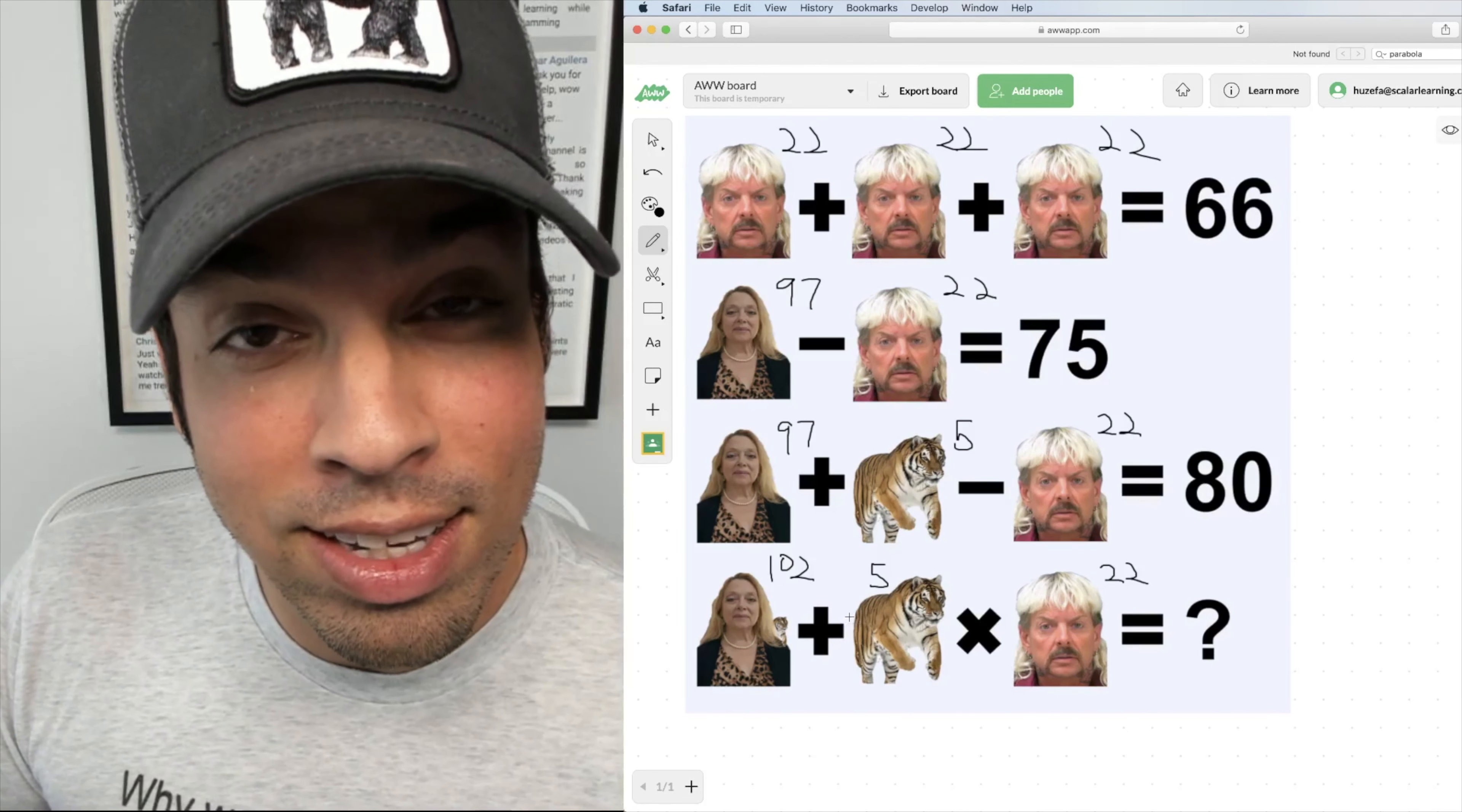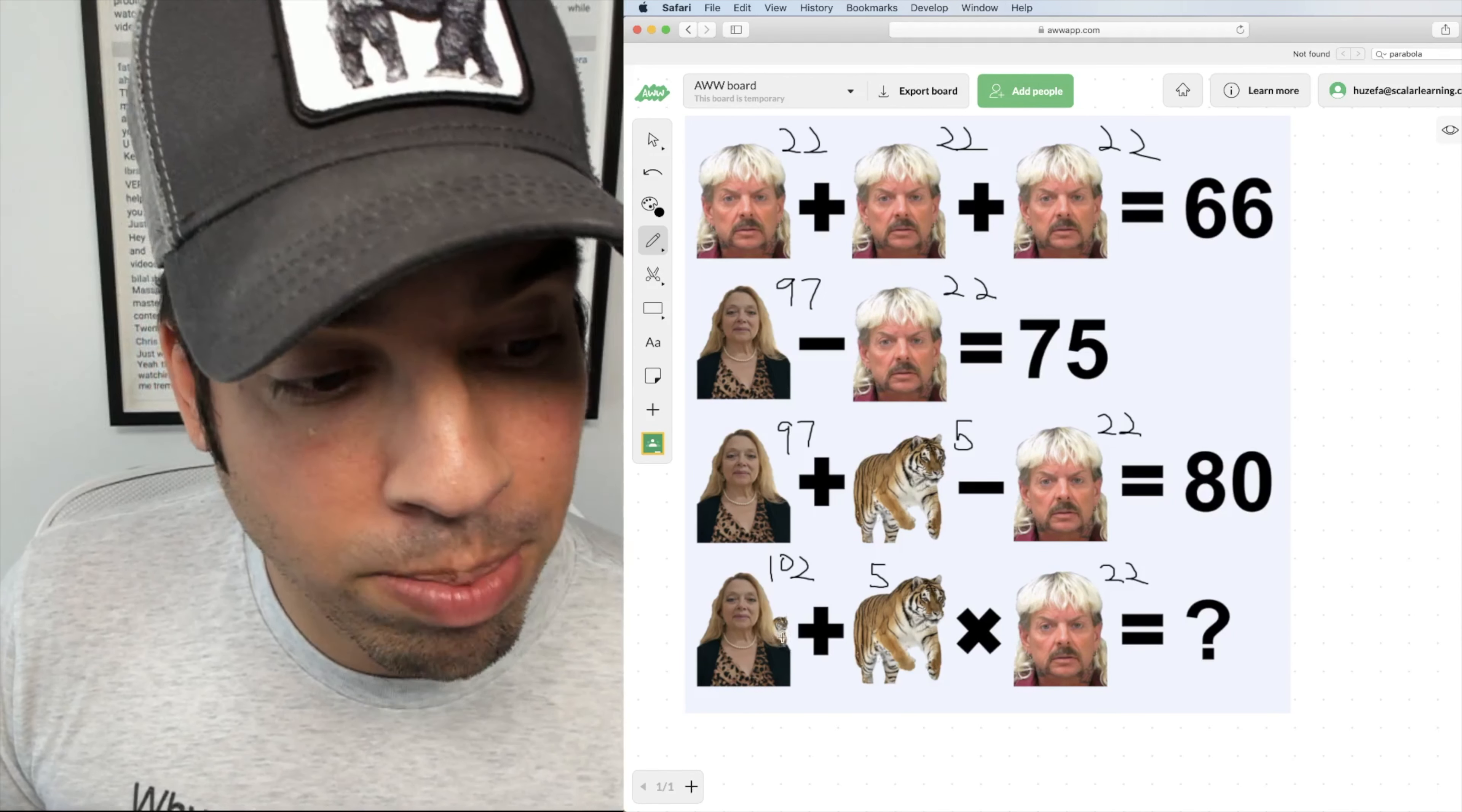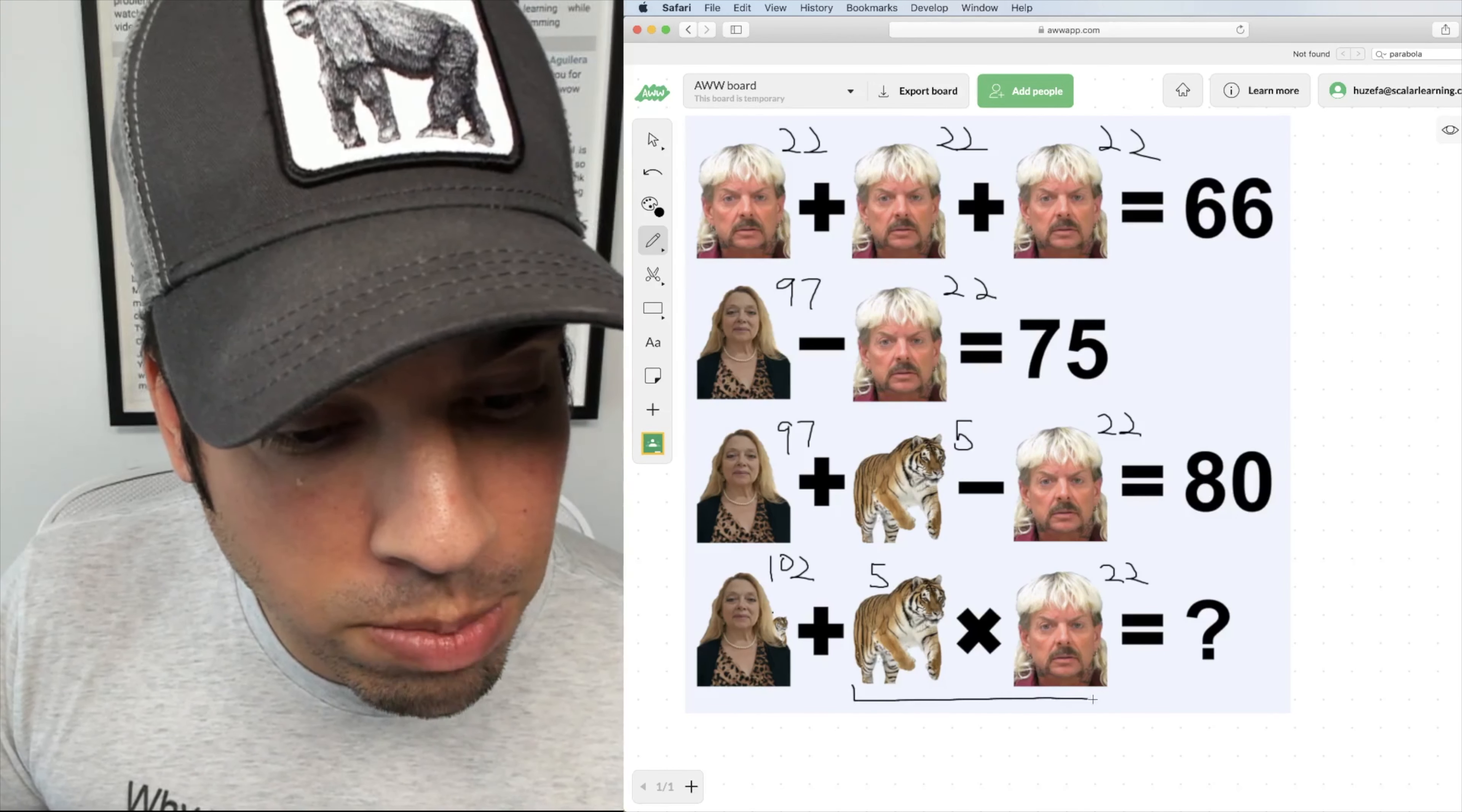The next little thing that you got to pay attention to, you always got to keep your eyes out for this on these puzzles, is order of operation. You don't go 102 plus 5 is 107 then multiply by 22. Multiplication must happen first.